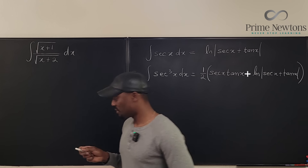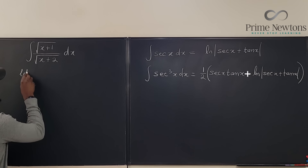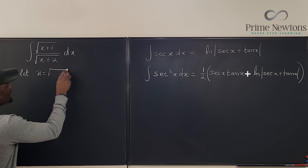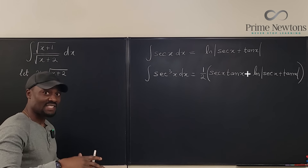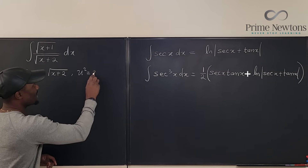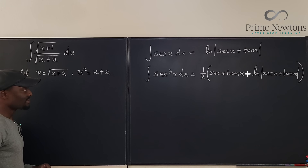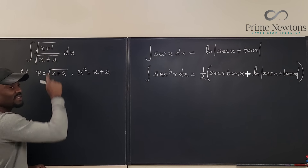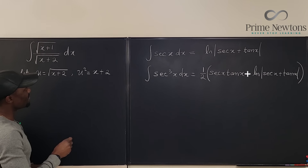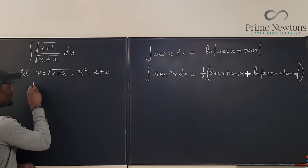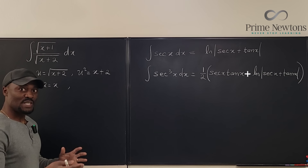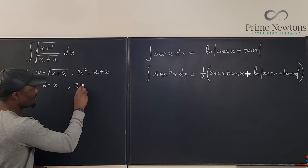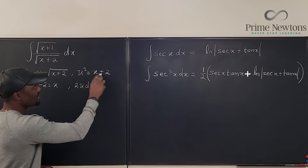I'm going to do a u-substitution. Let u equal the square root of x plus two. I need to replace everything that has x with u, so I have to free the x. I say u squared equals x plus two. Differentiating implicitly gives 2u du equals dx.